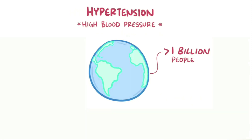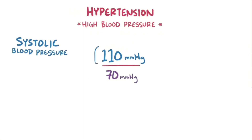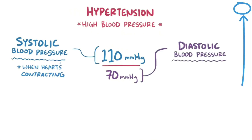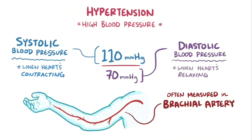Let's start by defining it. Blood pressure is typically represented by two numbers: the top number is the systolic blood pressure, which is the arterial pressure when the heart is contracting, and the lower number is the diastolic blood pressure, which is the arterial pressure when the heart is relaxing or refilling. Most of the time blood pressure is taken in the brachial artery in the upper arm.